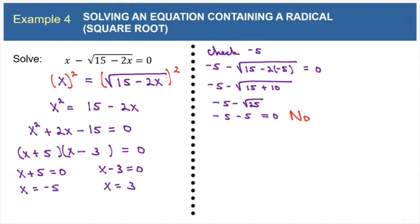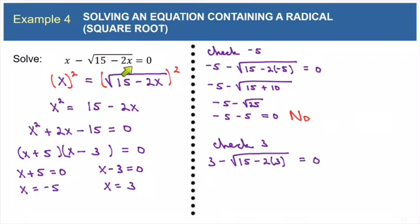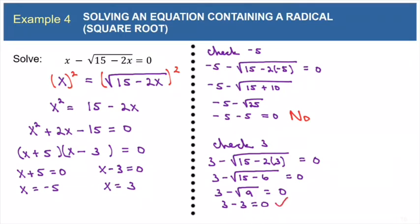I would love to tell you that if the first one fails, the second one is guaranteed to work — but that is not the case. You really do have to check both solutions; they might both fail, or they might both work. So let's check the 3: 3 minus the square root of 15 minus 2 times 3 equals 0. Under the radical, 15 minus 6 is 9. So we have 3 minus the square root of 9 equals 0. The square root of 9 is 3, so 3 minus 3 equals 0 — that is true. So 3 is a good solution but negative 5 is not. Our final solution is x equals 3.